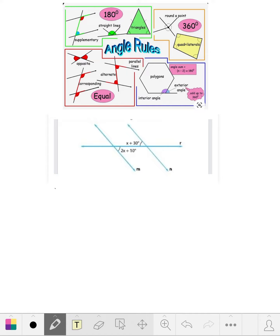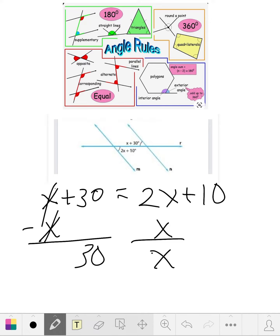equals 2x plus 10. What we want to do is get x by itself, so we can subtract x from each side. Now we have 30 here, the x's cross each other out, and on this side we have x plus 10.